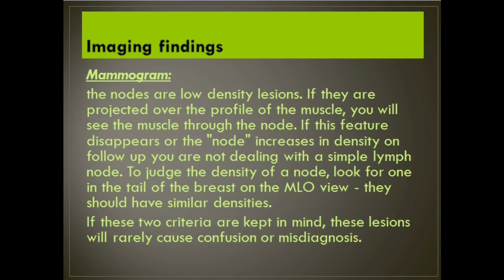The nodes are low-density lesions. If they are projected over the profile of the muscle, you will see the muscle through the node. If this feature disappears or the node increases in density on follow-up, you are not dealing with a simple lymph node. To judge the density of a node, look for one in the tail of the breast on the MLO view — they should have similar densities.